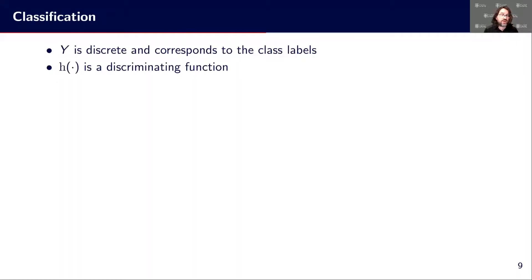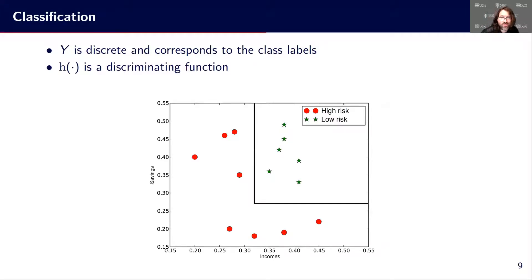One specific case of supervised learning is classification. So let's say that we have Y which is discrete and corresponds to class labels. H is then a discriminating function — it tends to provide a label for a given X. The decision is basically among the set of classes we defined beforehand. In the example of high and low credit risk clients, this is an example of classification with two classes: the high-risk clients and the low-risk clients.